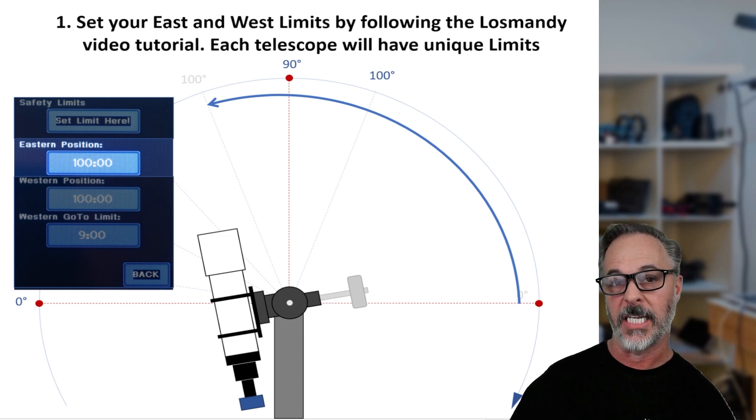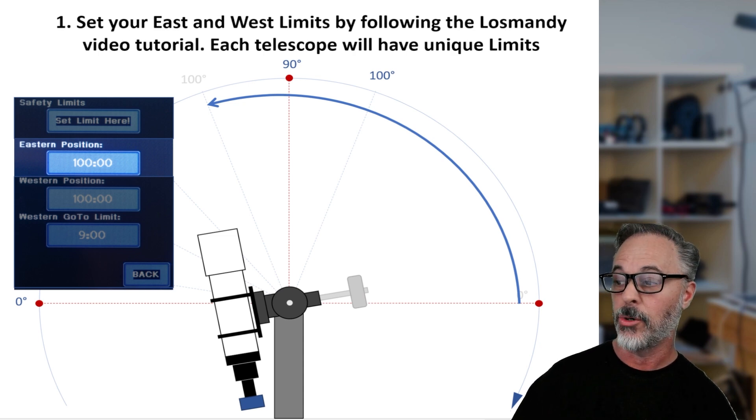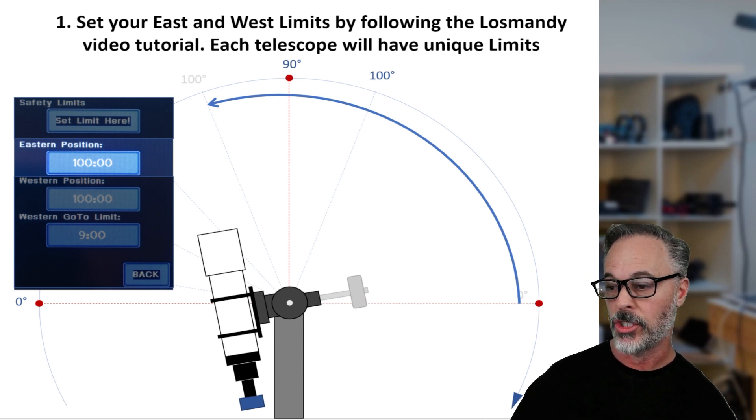The first thing we would do is we would set our eastern limits by rotating the scope around. And again, this is all covered in this video tutorial, so don't worry that we're not covering the details here.